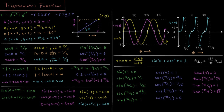All of these have corresponding inverses as well. We can define arcsine, which is what theta gives us this value of y over r. So the arcsine of y over r would be theta, because the sine of theta is y over r. The arccosine of x over r gives us theta, and the arctangent of y over x gives us theta.